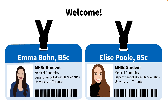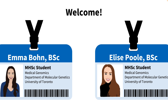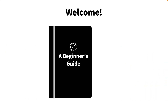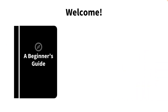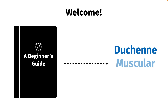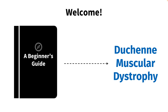My name is Emma, and my classmate Elise and I have put together this video to help you answer this question. We are both Master of Health Science students in the Medical Genomics program at the University of Toronto. In this video, we will provide you with a beginner's guide to a genetic disease called Duchenne muscular dystrophy, and use it as an example to help you understand one way in which changes to the DNA can cause disease.